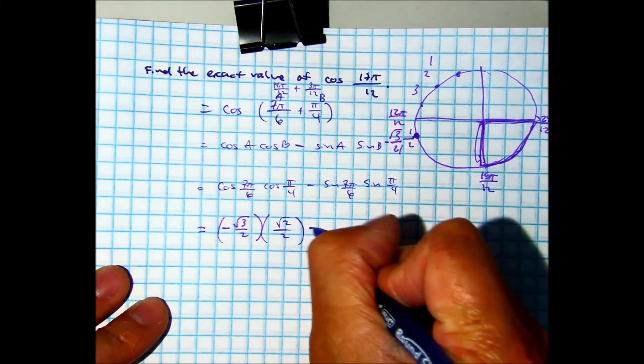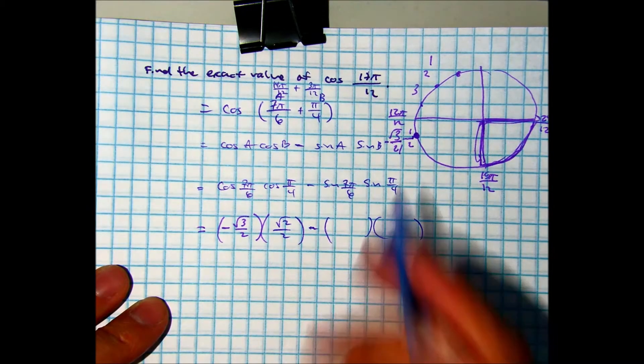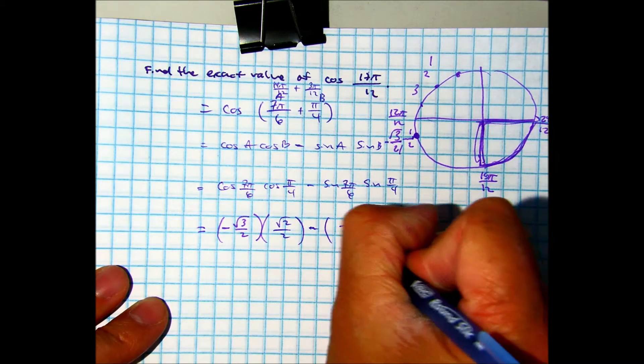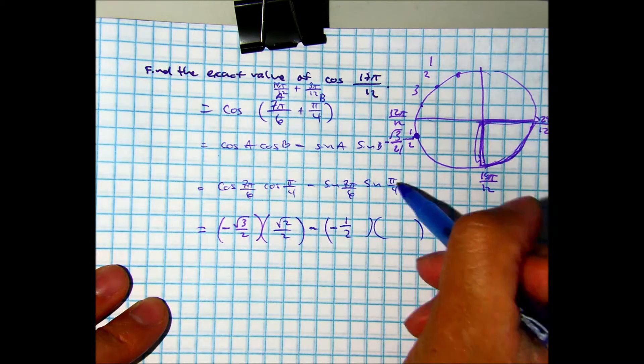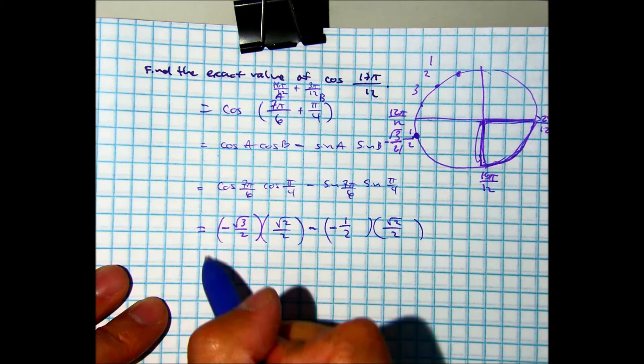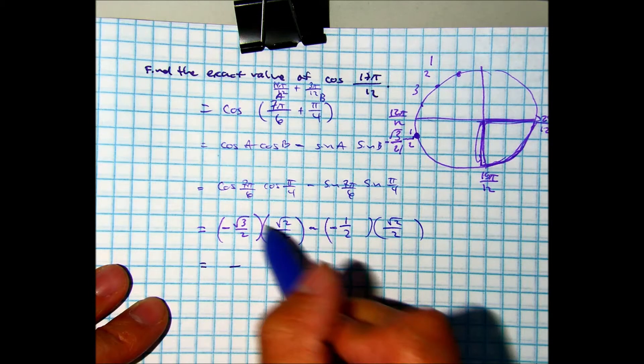Radical 2 over 2 minus sine of 7 pi over 6. Negative 1 half. And pi over 4. Does this problem look familiar? Same spot, right? Negative 6 pi over 4.